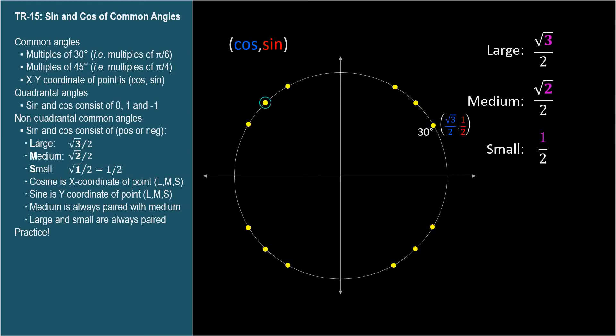How about this one? One-thirty-five degrees. The cosine and sine are negative medium, comma, positive medium. Negative square root of two over two, comma, positive square root of two over two.